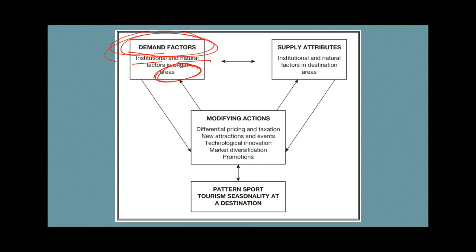We can also look at supply attributes — institutional and natural factors found in destination areas. For the Philippines as a destination, the natural factor is that summer is hot and not very rainy, making it conducive for sightseeing and going to the beach. The institutional factor is that during summer, everybody is on vacation, so more people are engaged in tourism work.